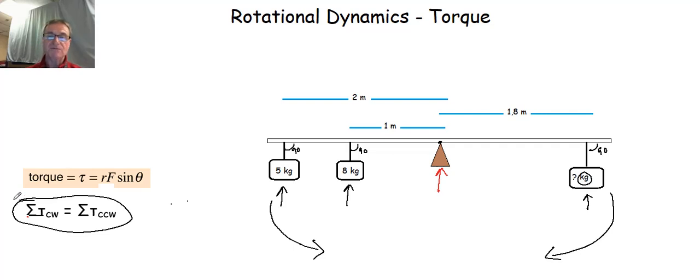So that's really what I need to do is find out what all those torques are. If you remember, torque is equal to the force on a rotating object or an object that can rotate times the distance from the center of rotation or the pivot point. So I've got the distances all labeled up here. The distance that the 8 kilogram mass is from the pivot point is 1 meter. The distance the 5 kilogram mass is from the pivot point is 2 meters. And the distance that the unknown mass is from the pivot point is 1.8 meters.